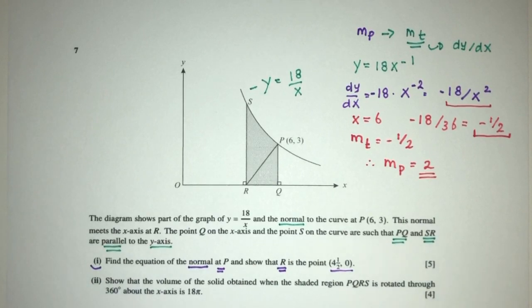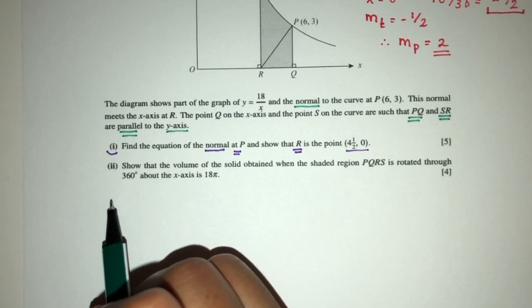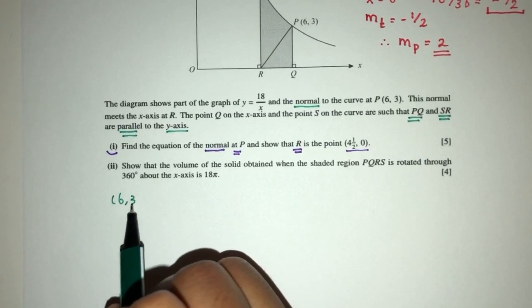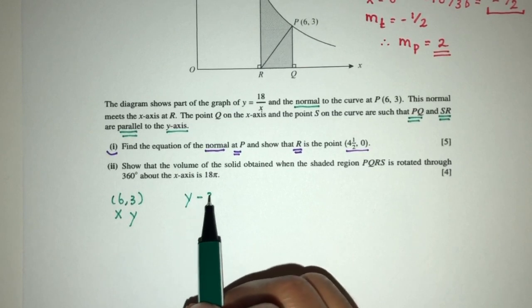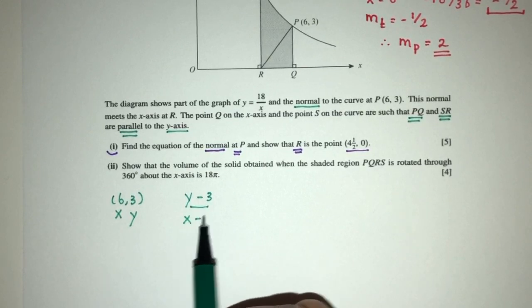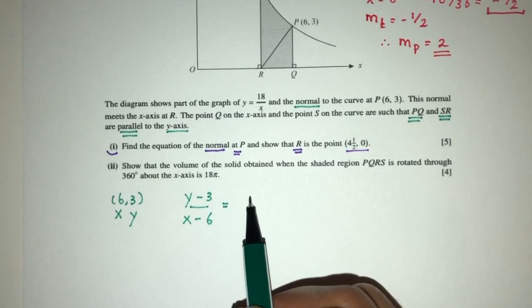Now since we have the gradient and the passing point, we're going to find the equation pretty easily. The passing point is (6, 3). So y minus 3 over x minus 6 will be equal to the gradient, which is 2.